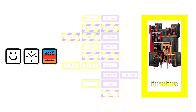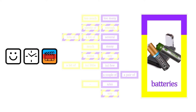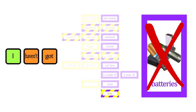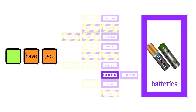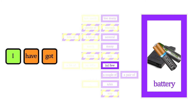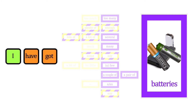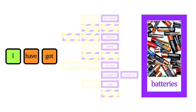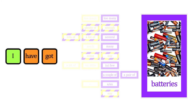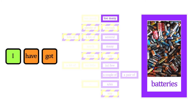I've been using have or don't have all the time, so I am going to use something different. I haven't got any batteries. I have got a battery. I have got a couple of batteries, or I have got a pair of batteries. I have got a few batteries. I have got some batteries. I have got many batteries. I have got several batteries, or I have got a lot of batteries, or lots of batteries. I have got enough batteries. I have got plenty of batteries. I have got too many batteries.